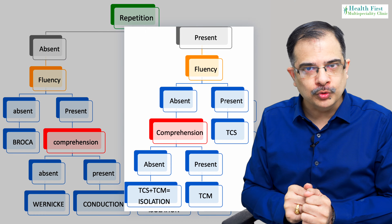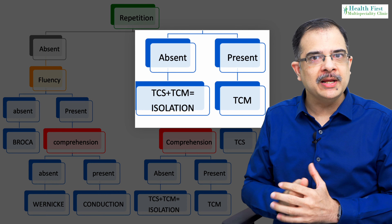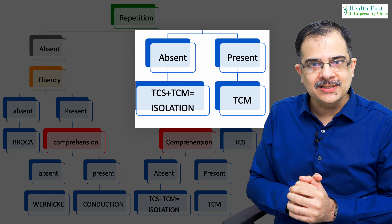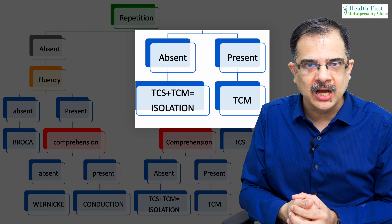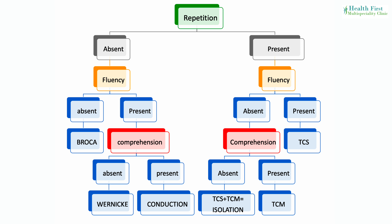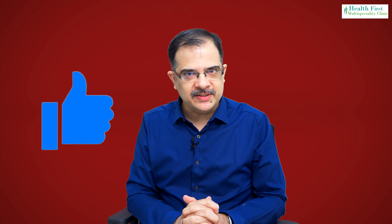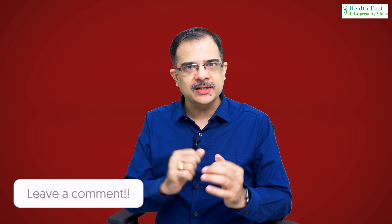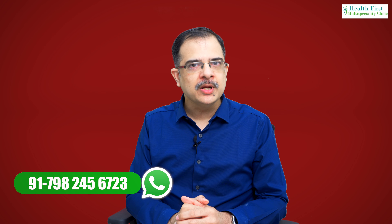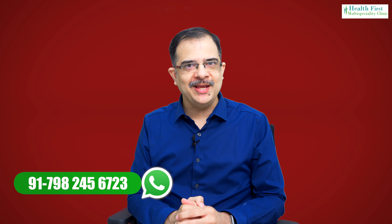While if repetition is positive, fluency is negative, and comprehension is gone, that means both transcortical sensory and transcortical motor are affected — that is a case of isolation aphasia. With this simple flowchart you can attempt any MCQ or any clinical case of aphasia. Hopefully you liked this video. If you have any questions, put them in the comment section. You can also note down the WhatsApp number to put your doubts. Thank you.